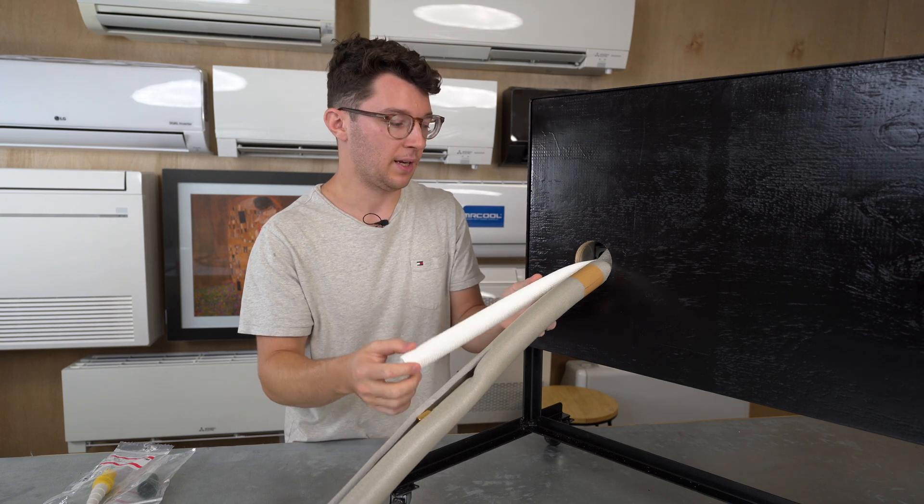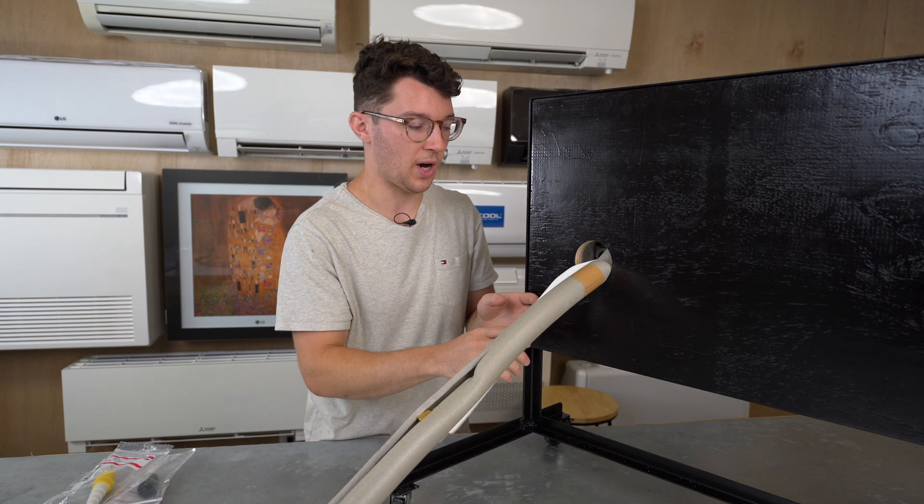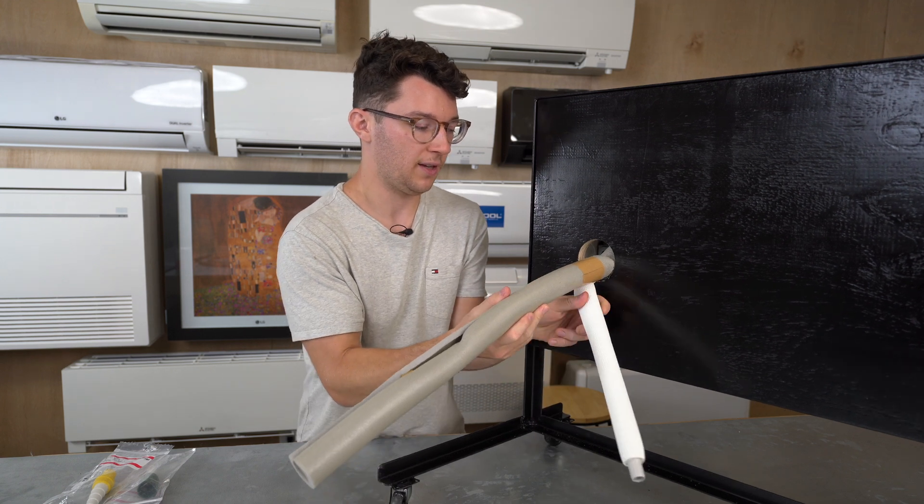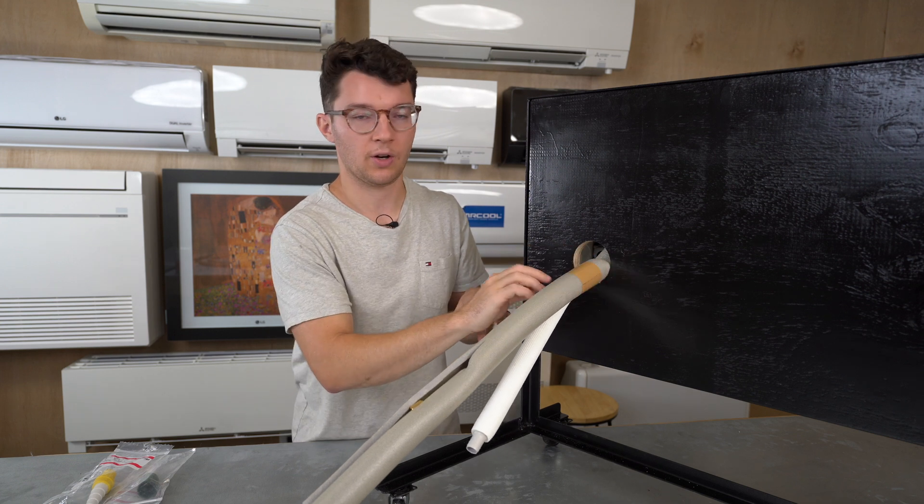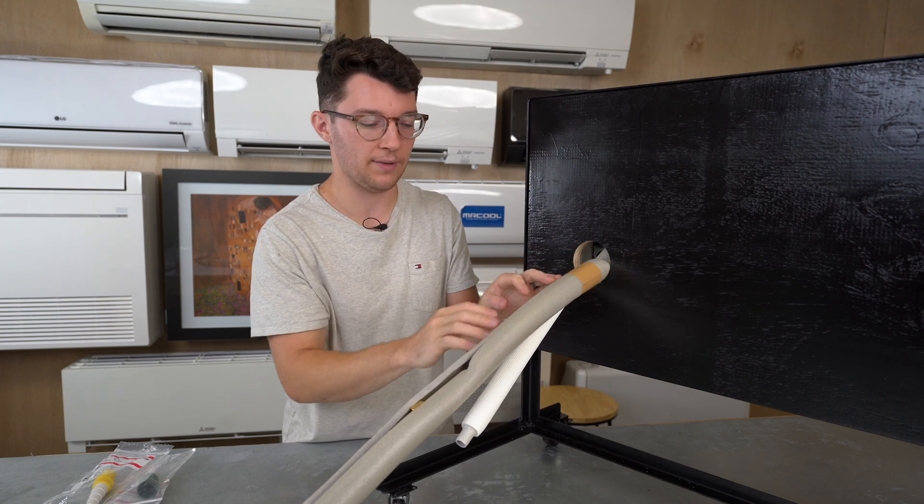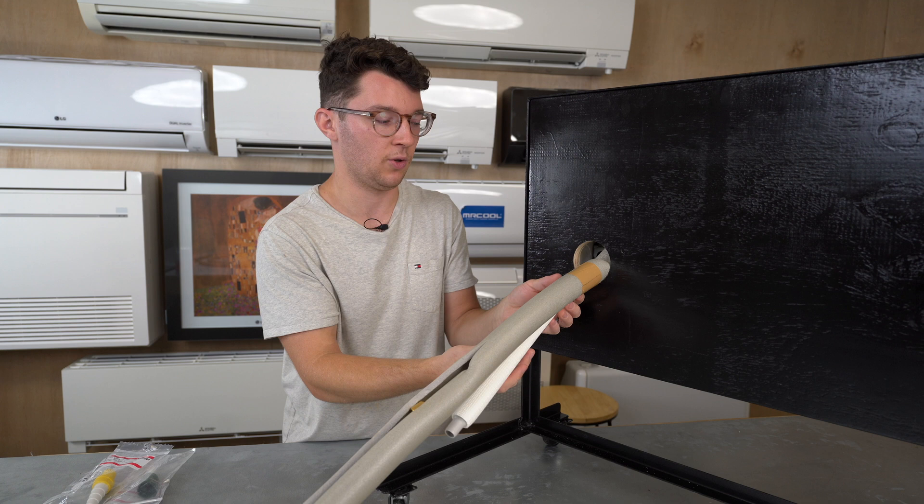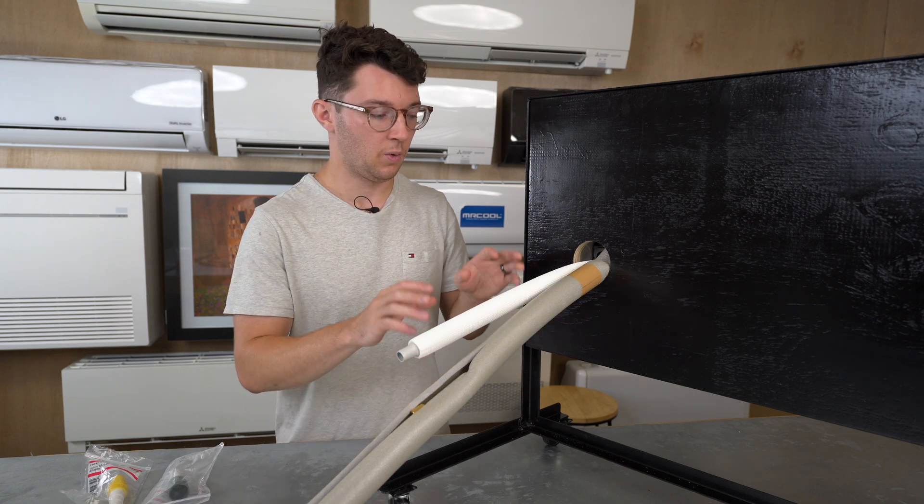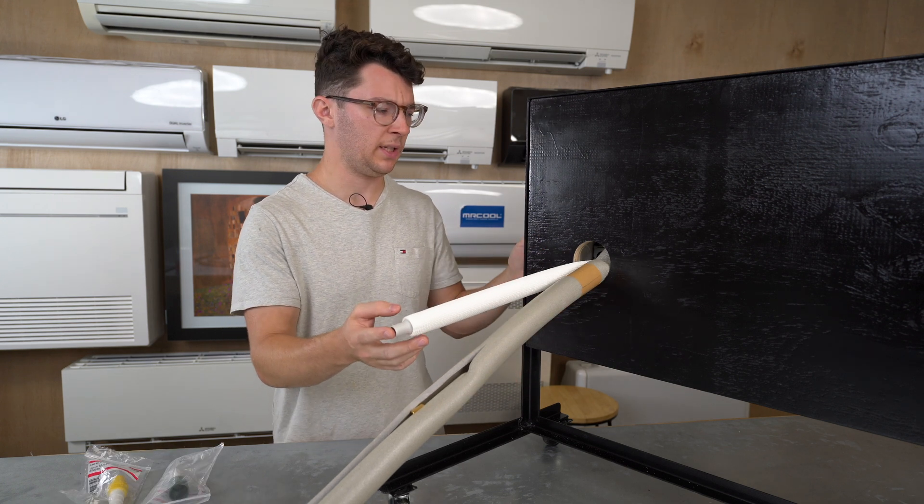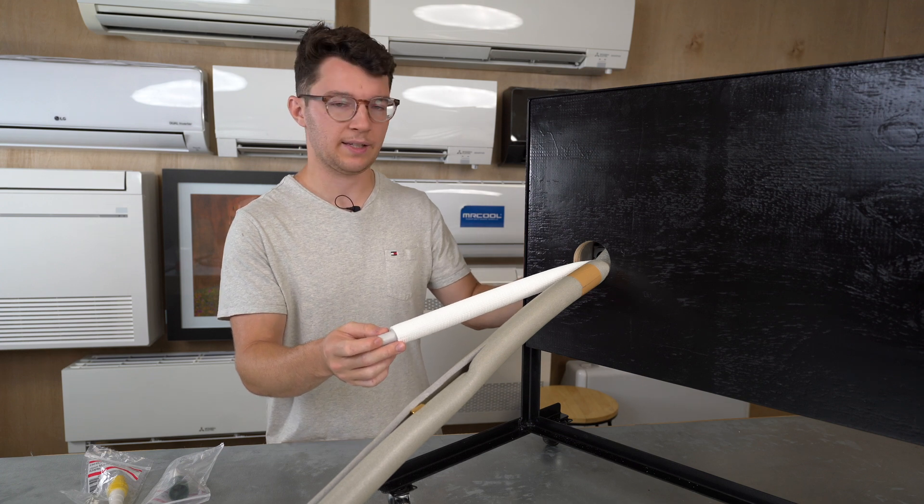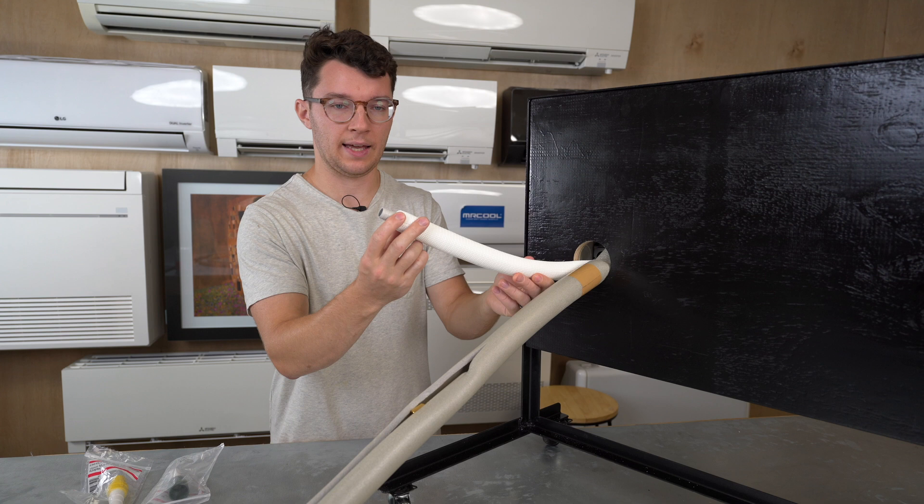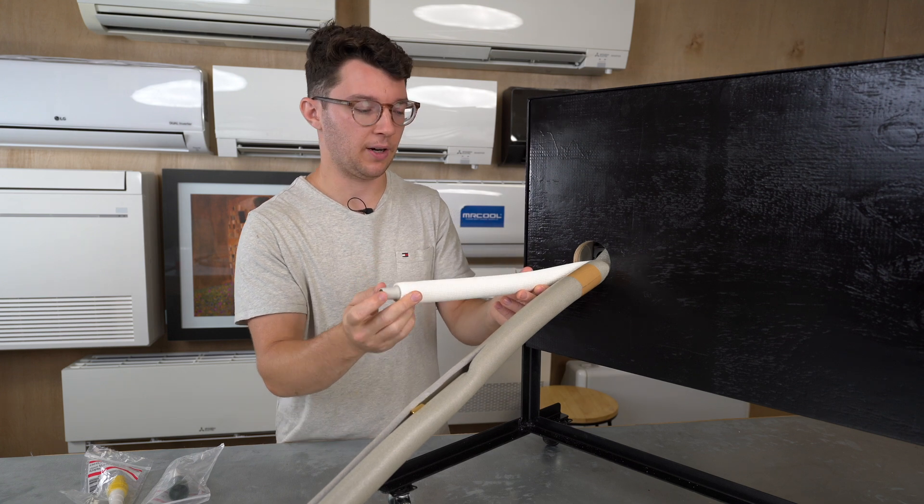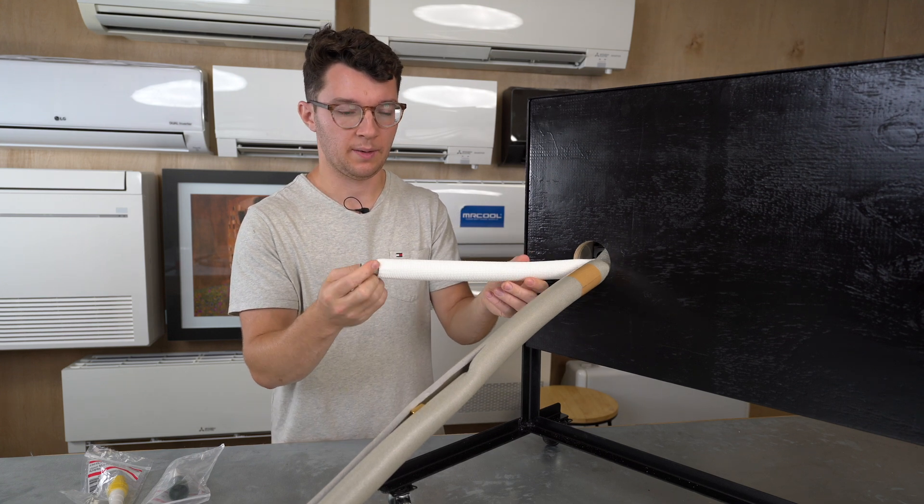This condensate hose can be directed down with gravity or on a horizontal slope, but making sure that your condensate hose is always underneath the refrigerant lines to make sure that you don't have any clogs.